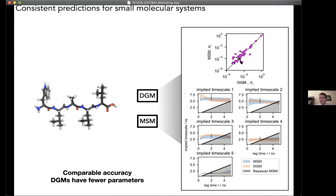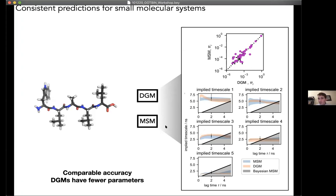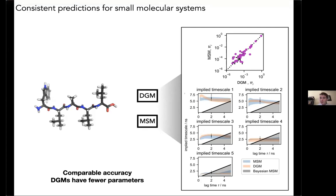We get very good agreement on relative probabilities of different states and also the kinetics — the timescales of exchange between different states. The key point is that in the Markov state model we have tens of thousands of parameters, whereas in the dynamic graphical model we have only tens of parameters. So we achieve a significant compression of the physical dynamics of the system by using this different representation.